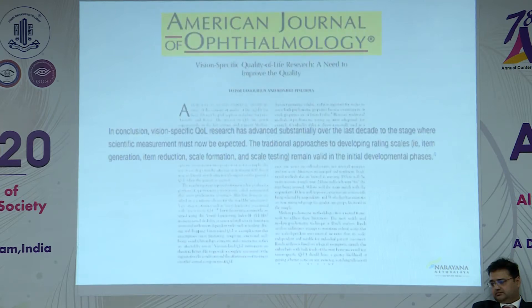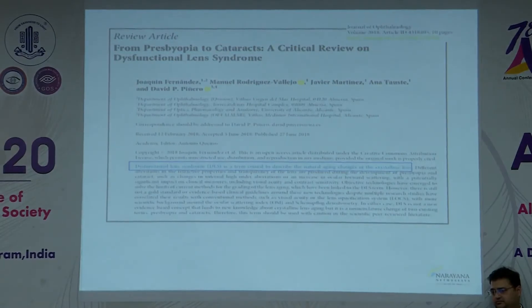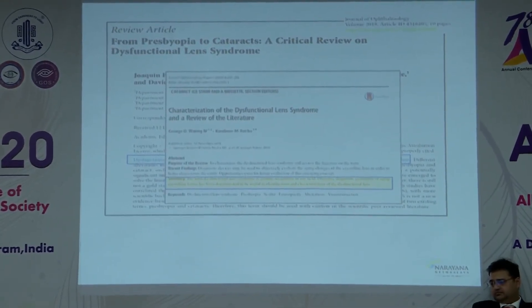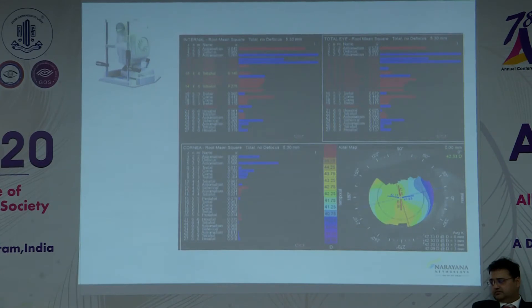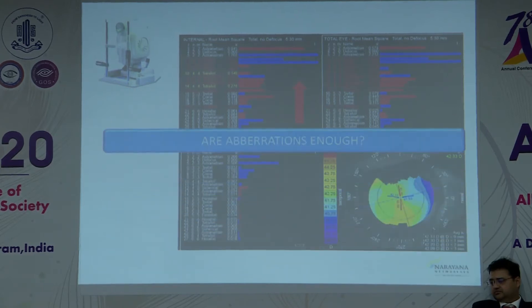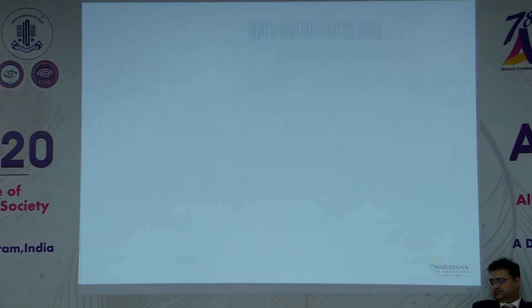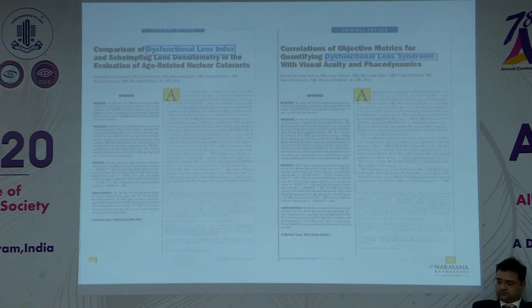Going through review of literature, the American Journal of Ophthalmology addressed quality of life research and rating scale development. Dysfunctional lens index is a term coined to describe the natural aging changes in the crystalline lens. There is now growing acceptance of objectively categorizing the amount of cataract present. The eye trace gives us separately what the internal aberrations are versus the corneal aberrations. These internal aberrations constitute the dysfunctional lens syndrome. Current modalities cannot quantify dysfunctional lens, so the question arises: are aberrations alone enough? The dysfunctional lens index is a multifactorial index that comes from the eye trace, and there is already published literature on its comparison and correlation with objective metrics for quantifying dysfunctional lens syndrome.